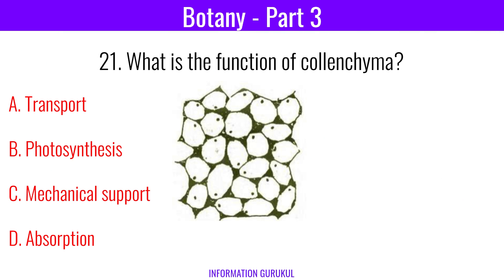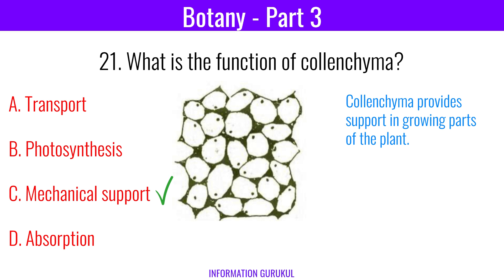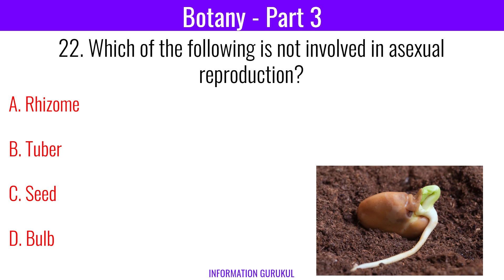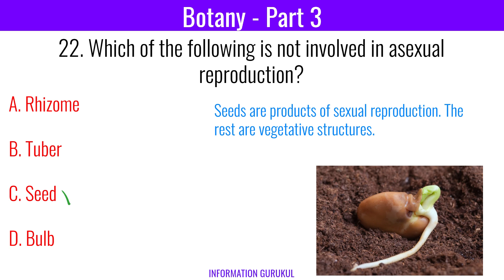What is the function of colenchyma? Mechanical support. Colenchyma provides support in growing parts of the plant. Which of the following is not involved in asexual reproduction? Seeds. Seeds are products of sexual reproduction; the rest are vegetative structures.